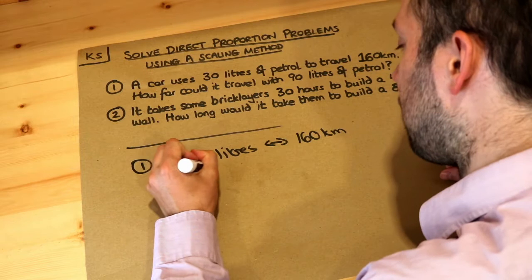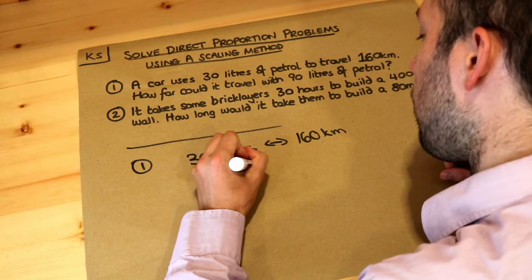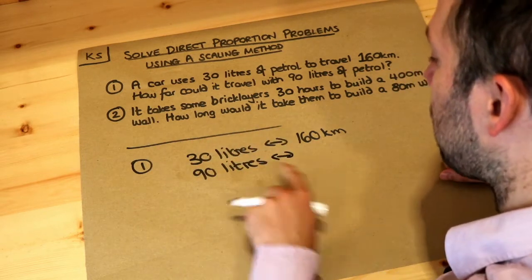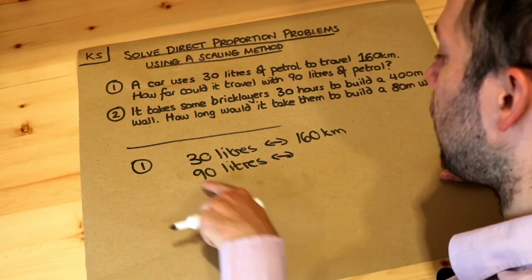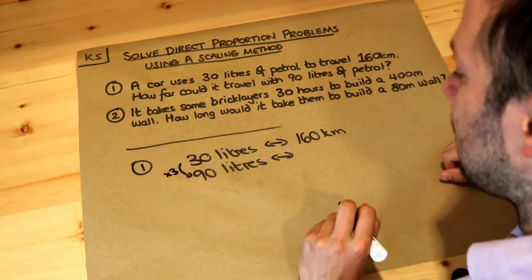So if we write the 90 litres of petrol in the next row, well let's think about how this amount of petrol has scaled. Well, 90 is three times as big as 30 litres.